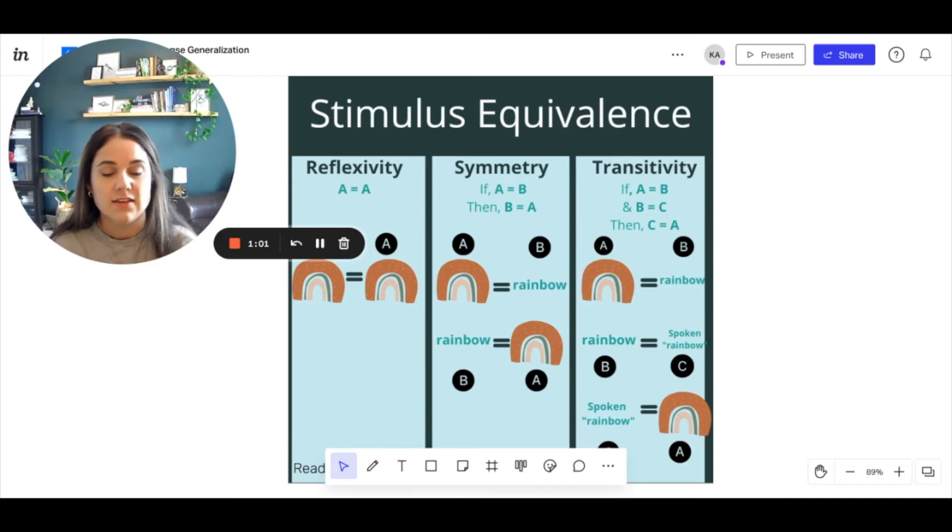Then A equals C is now that you've understood the way that these stimuli are equal, the written word rainbow and the picture of the rainbow, now you can understand the spoken word. So if I say the word rainbow, what is it,